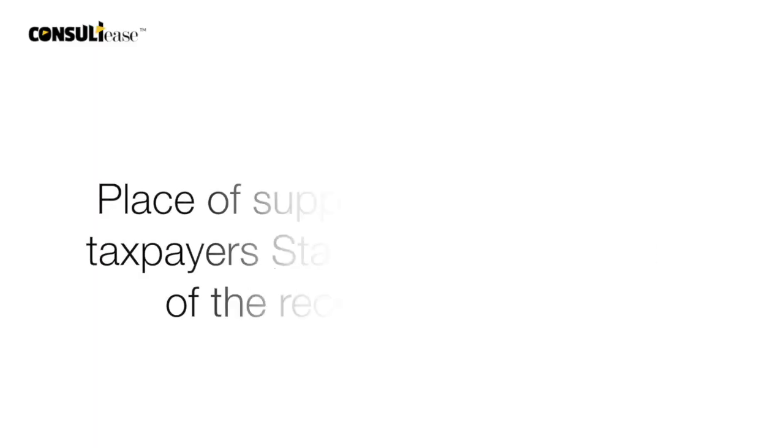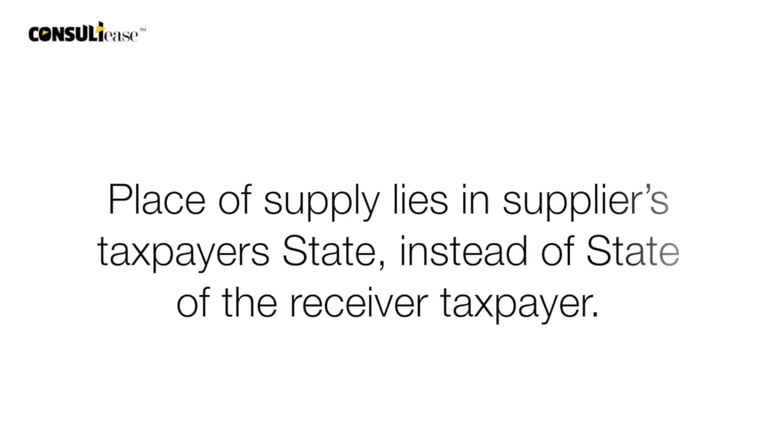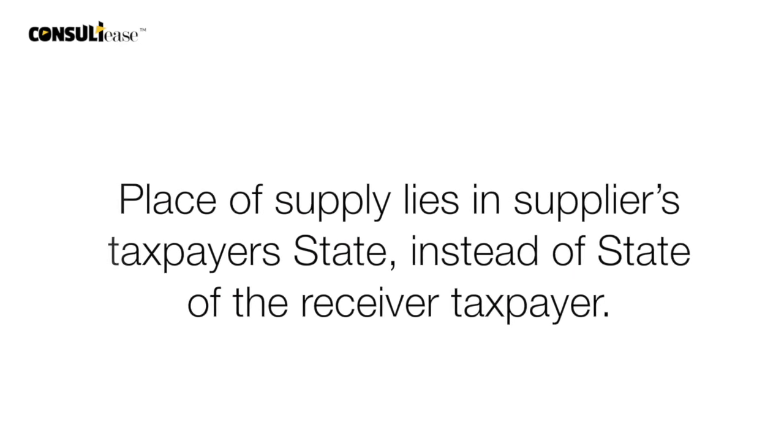Another reason for the difference is that the place of supply was different from the recipient's state. In that case, the transaction was auto-reflected in 2A but not in Table 8. What is the liability here? If you have claimed input tax credit in such a case, you will have a liability, because if the place of supply is different from your state, the credit is not eligible under GST.